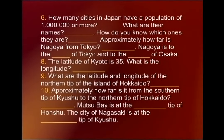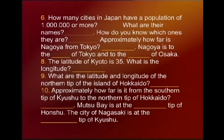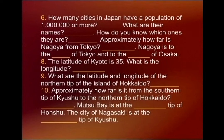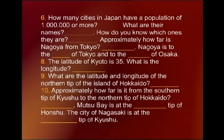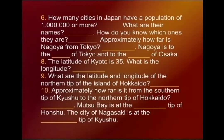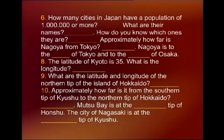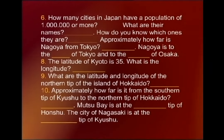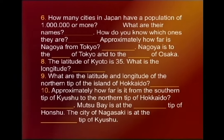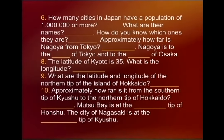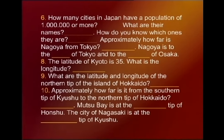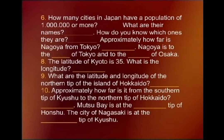How far is Nagoya from Tokyo? It is approximately 390 kilometers. Number eight: The latitude of Kyoto is 35 — what is the longitude? Number nine: What are the latitude and longitude of the northern tip of the island of Hokkaido? Number ten: Approximately how far is it from the southern tip of Kyushu to the northern tip of Hokkaido? Approximately 1,890 kilometers.